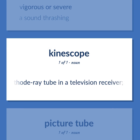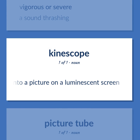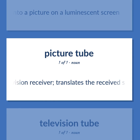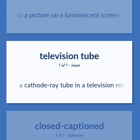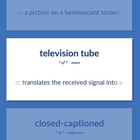Picture tube: a cathode ray tube in a television receiver that translates the received signal into a picture on a luminescent screen.